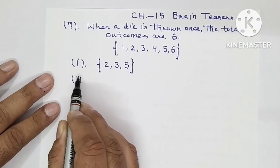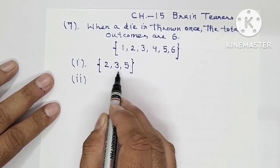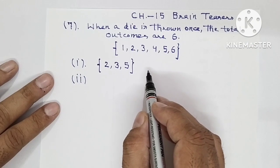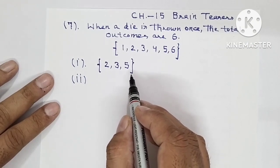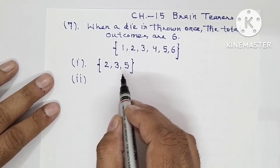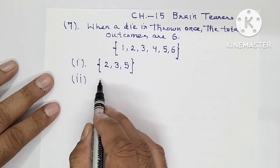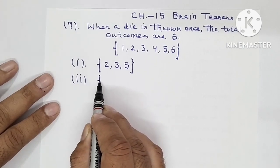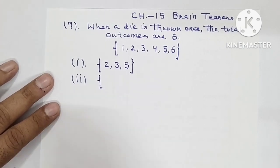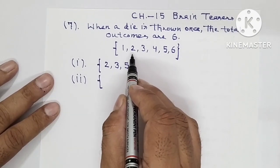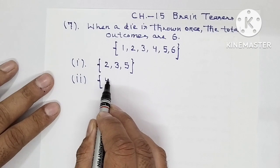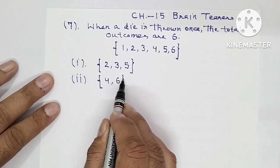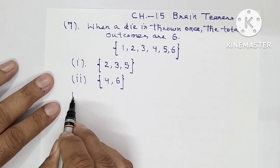Second part — these are the outcomes of a prime number. Now next are the outcomes of a composite number. Composite numbers are those which have more than 2 factors. So the composite numbers here are 4 and 6 — only 2 outcomes.